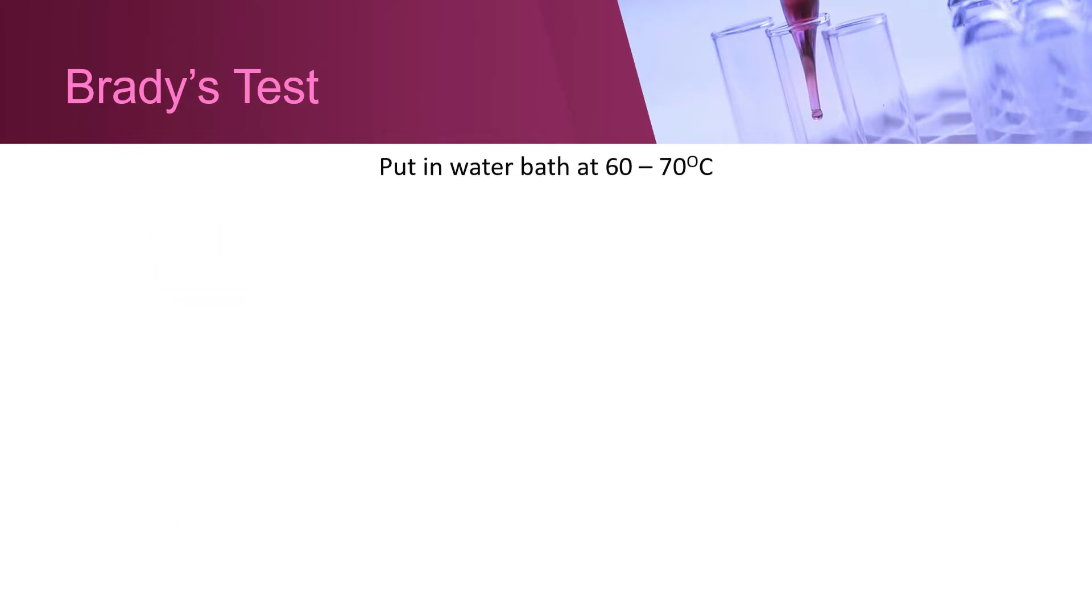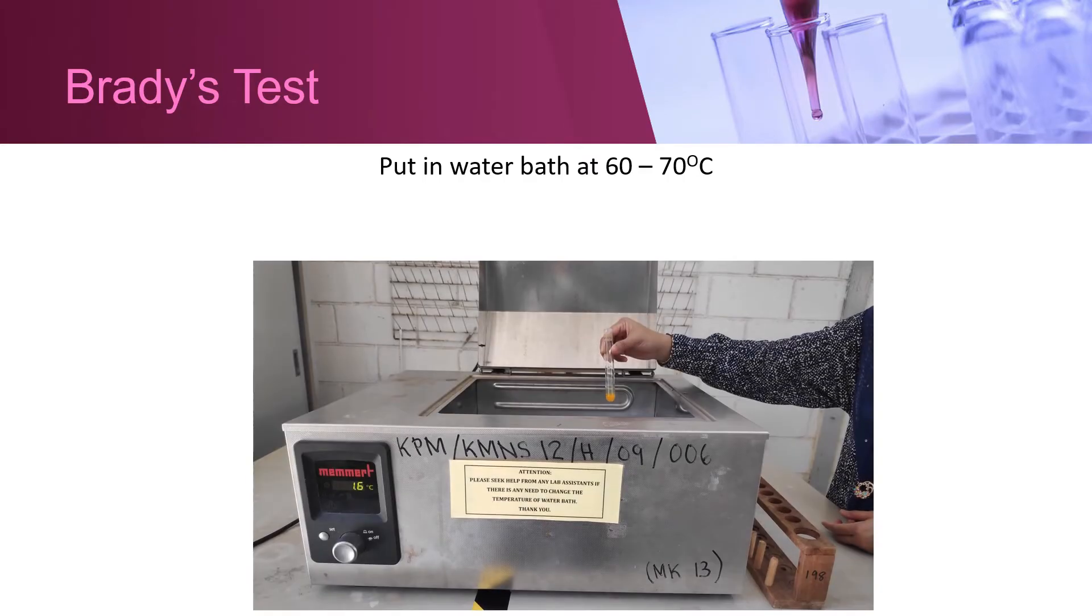Shake the test tube and heat in a water bath at 60 to 70 degrees Celsius. Observe the formation of precipitate.